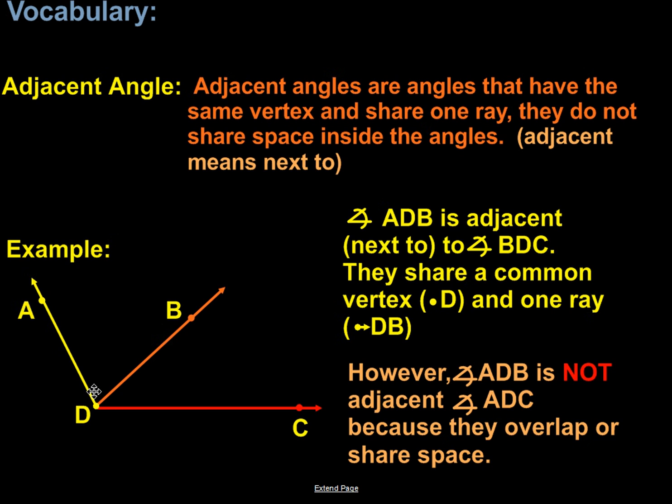Now if we take ADB and compare that to angle ADC, you can see there's overlapping that occurs. They do have the same vertex, but they're not sharing the same ray. They overlap. And when you overlap, you can't be an adjacent angle. So both things have to be true.